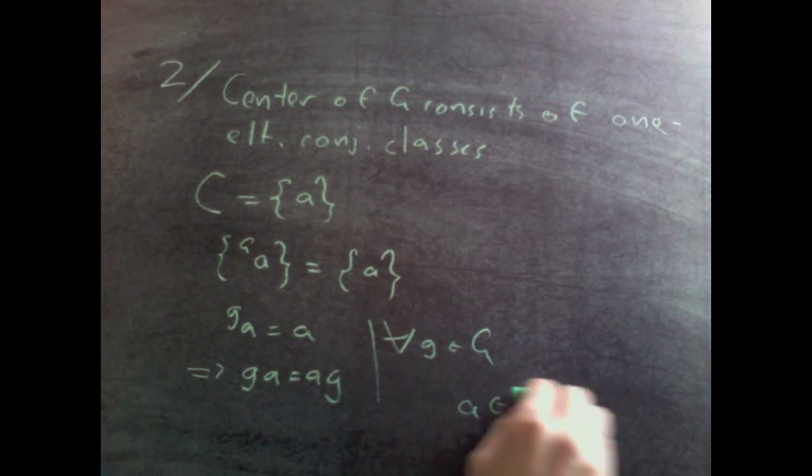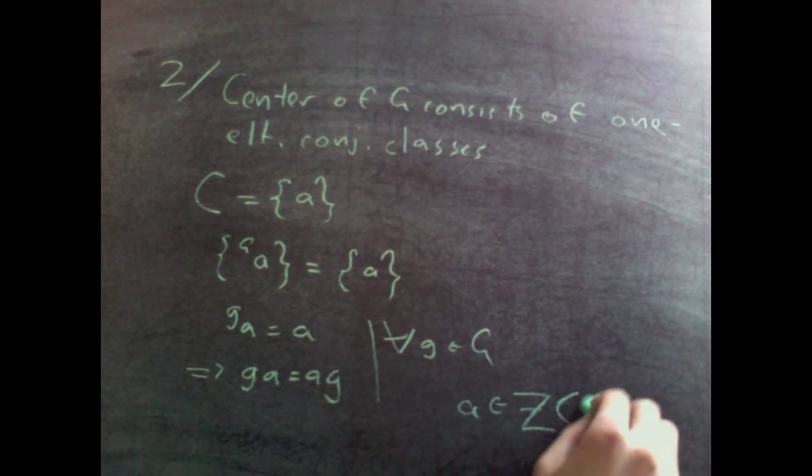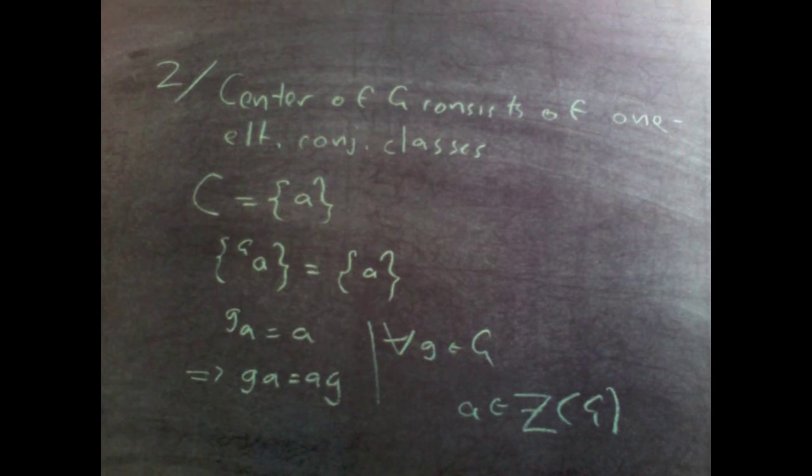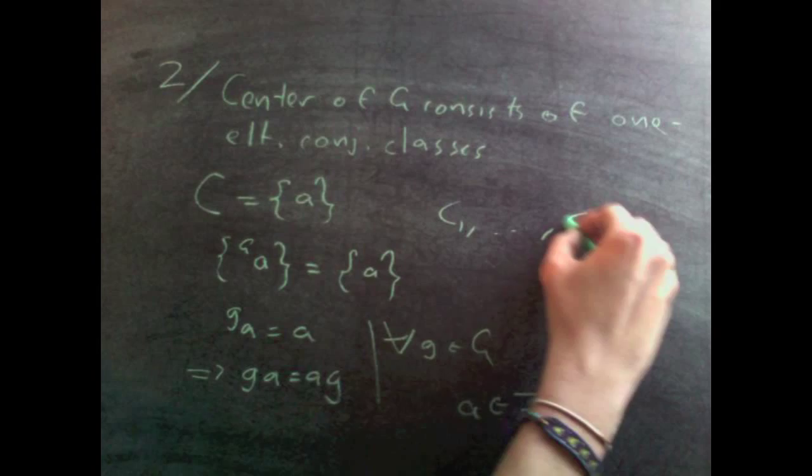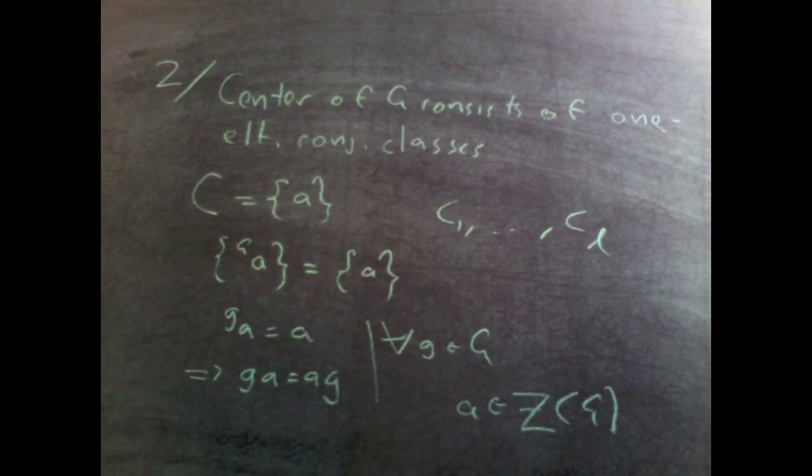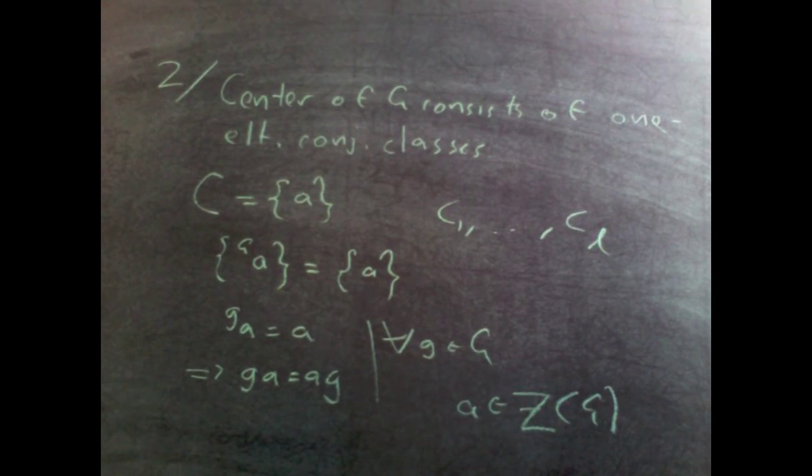So a is in the center of g. What this shows is that for those l conjugacy classes which had just one element, all those elements lie in the center of g.